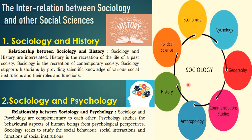For example, we will see the relationship between sociology and history. Sociology means learning about the present society, and history means learning about the past society. So, sociology will help the historians — the people who study, learn about, and write about history. Sociology gives us more knowledge, especially to historians, about society, so that they can learn and then write history. Somehow sociology is helping historians to write about history.